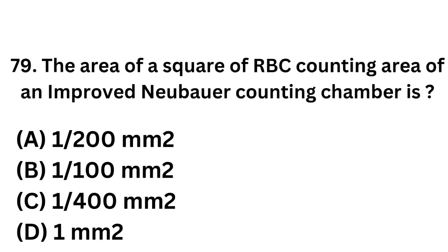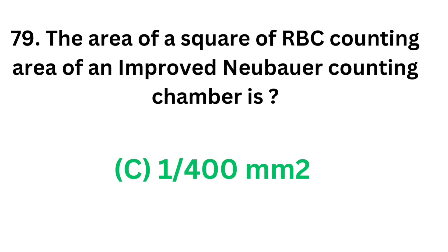Question number 79. The area of a small square of the RBC counting area of an improved Neubauer counting chamber is: Option A: 1/200 mm². Option B: 1/100 mm². Option C: 1/400 mm². Option D: 1 mm². The correct answer is Option C: 1/400 mm².